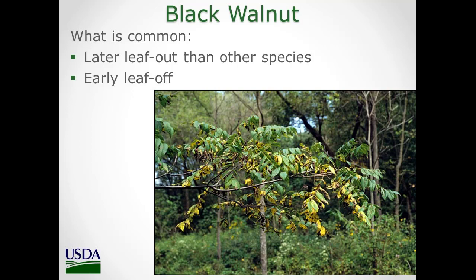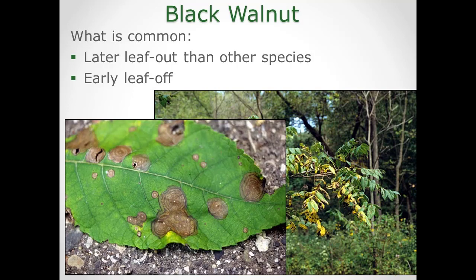One thing you'll see is that black walnut leafs out a lot later than other species. Some people get a little worried in spring when everything else is leafing out and the black walnut isn't — just wait a bit. They also often get leaf diseases, and by the end of the growing season they've lost most of their leaves. Leaf diseases usually won't kill the tree, but if they happen over and over, they can shorten the growing season and stress the tree. They're common, but we don't worry too much about them in black walnut — besides, there's not a lot we could do about them.